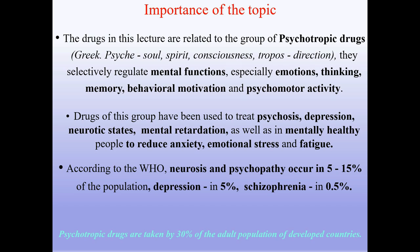According to the World Health Organization, neurosis and psychopathy occur in 5–15% of the population, depression in 5%, and schizophrenia in 0.5%. Psychotropic drugs are taken by 30% of the adult population of developed countries.